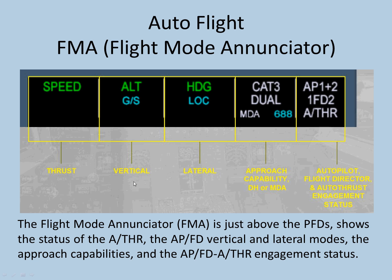Vertical relates to your height, heading and navigation is your lateral, and thrust relates to your speed — whether it's manual or maintaining speed mode. Autothrust active or not, which Autopilot is engaged, and so on. Category 3 Dual, Cat 1, Cat 2 — all of this comes up in the FMA.